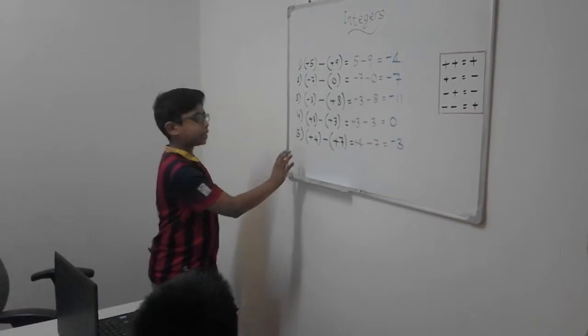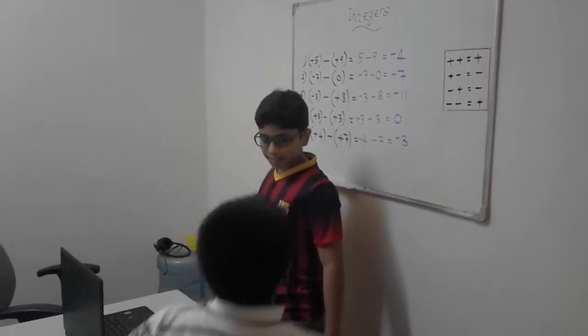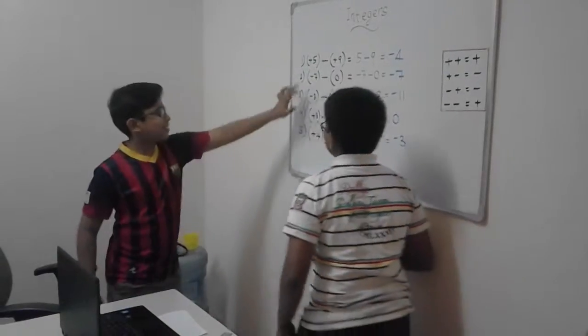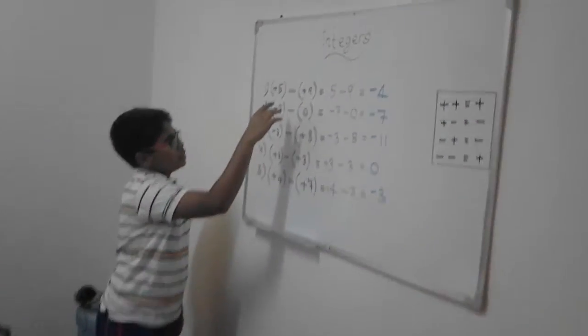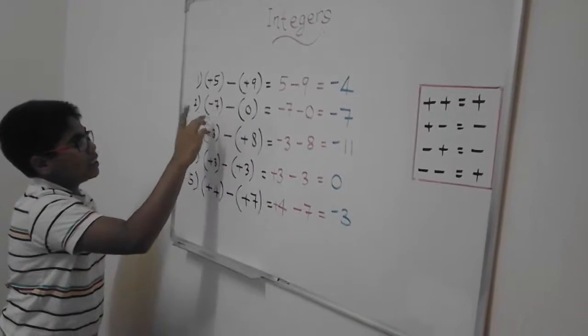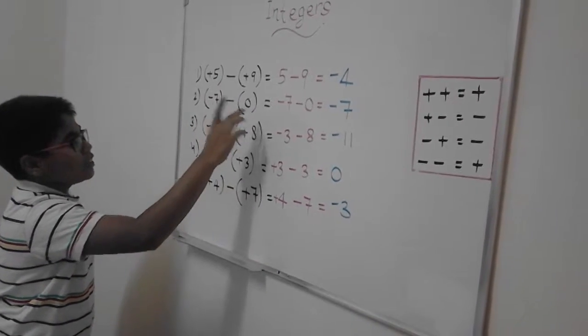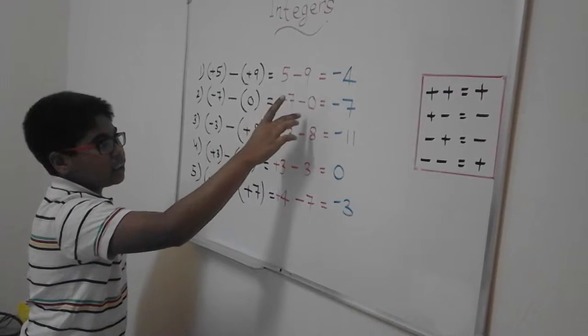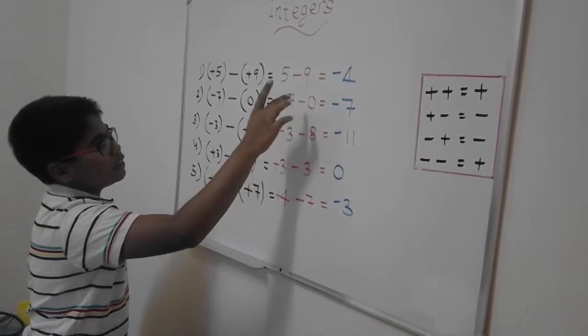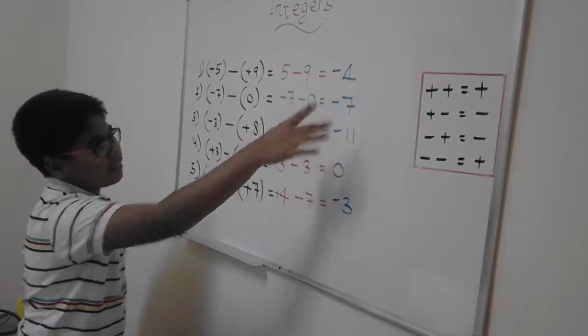So one by one, you can come and explain. First example. Here it is minus 7. Minus 7 minus 0. The question is minus 7 minus 0. So the answer will be minus 7. So 0 is not counted. 0 is neither prime nor composite. So minus 7.